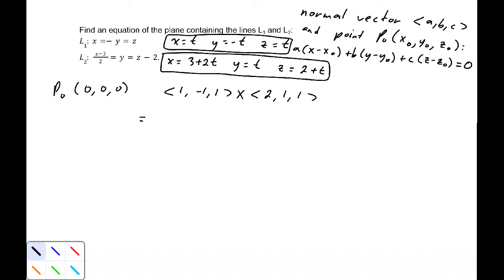So let's set up the determinant form. I've got the determinant of i, j, k, with my second row being 1, -1, 1, and my third row being 2, 1, 1.